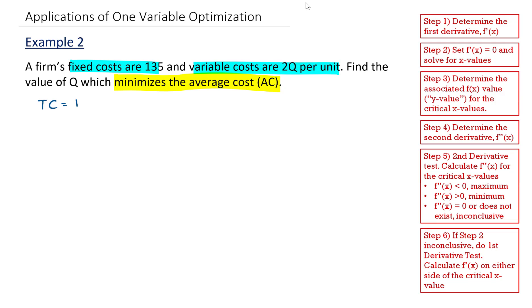So total cost is going to be equal to fixed cost plus variable cost times quantity. In this case, my fixed costs are 135 plus my variable costs are 2Q times Q.